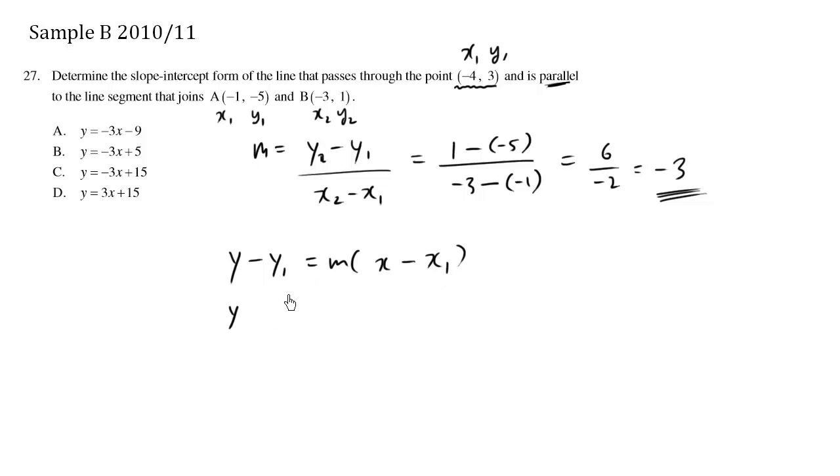And we can plug in the values. Y minus y1, which is 3, equals m, which is negative 3, times x minus x1, x1 being negative 4.